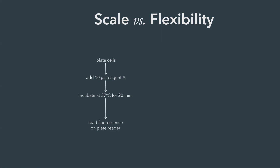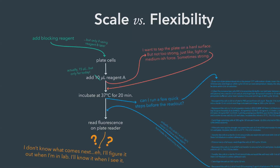But if you're in the early stages of assay development, your workflow will quickly morph into something like this. There's a brand new step in the beginning with a conditional: I want to add a blocking reagent, but only if we're using Reagent B later. There's a modification: instead of adding 10 microliters, I actually want to add 15 microliters, but only for today. There's a somewhat vague request: after we add that reagent, I want to tap the plate on a hard surface, but not too strong — just light or medium, sometimes strong. We have an addition of new steps: after the incubation, I just want to run a few quick steps — it's only about 20 steps, it'll take about 3 hours. And then finally there's some ambiguity: after the readout, I want to do something with the plate — I don't know what I want to do next, but I'll figure it out when I get in the lab. I'll know it when I see it.